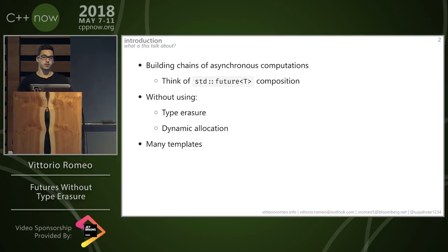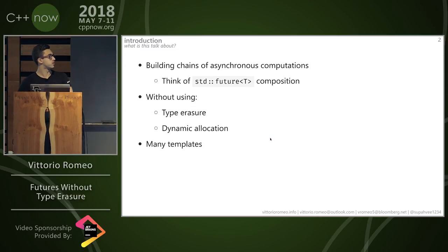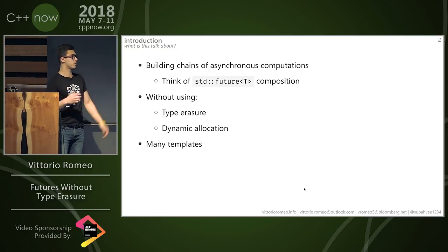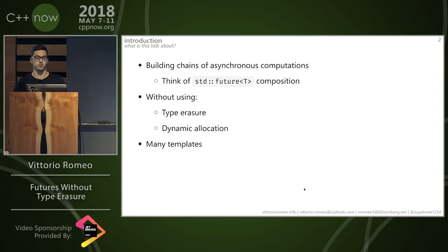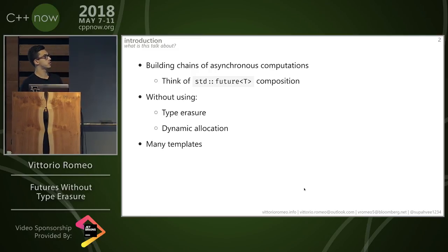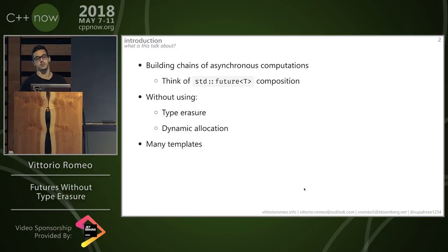I'm going to stay behind this laptop not because I'm shy, but because I have the power of JavaScript and can highlight various pieces of code snippets. This talk is full of code snippets, which is going to be useful to follow along. What I'm going to talk about is building chains of asynchronous computations, like C++ future composition, without using type erasure and dynamic allocation — and there are going to be a lot of templates.